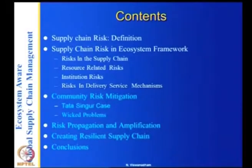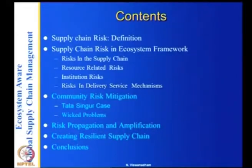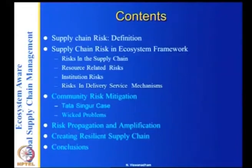We are going to continue where we left on supply chain risk. Last time, we took the definition of supply chain risk and dealt extensively with all the risks that can arise in the supply chain: resource-related risk, institution risk, and risks in the delivery service mechanisms. I gave lots of examples. Why is it important to list all these risks? Because unless you diagnose the fault, you cannot rectify it. So it's very important that you know all the risks so that you can then try to mitigate them.